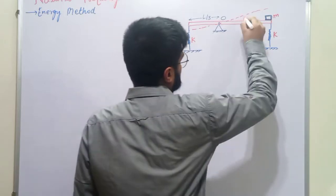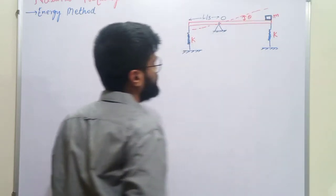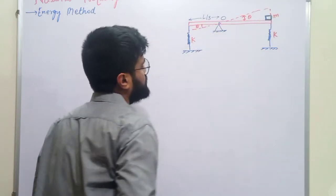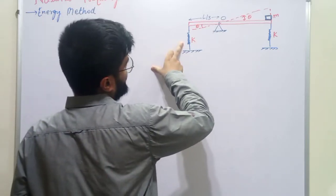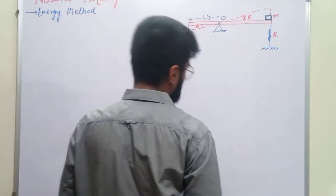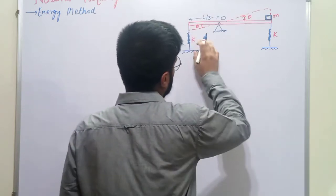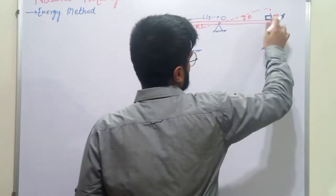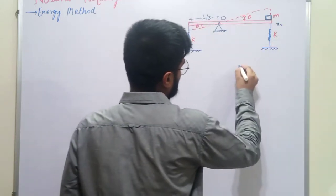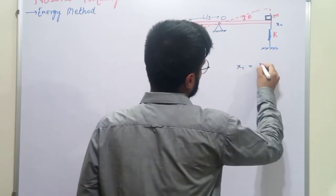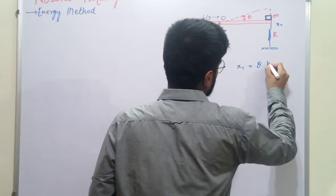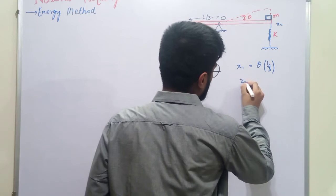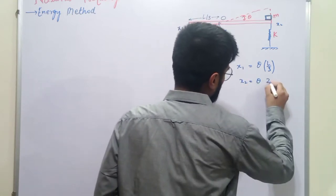The rod is rotating or vibrating and making angle theta at any particular instant. So what will be the deflection for each spring? Let the deflection for the first spring be x1 and for the second spring be x2. So x1 will be equal to theta times L/3, and x2 is equal to theta times 2L/3.